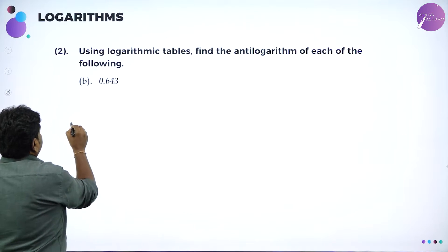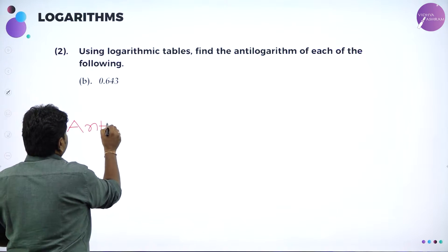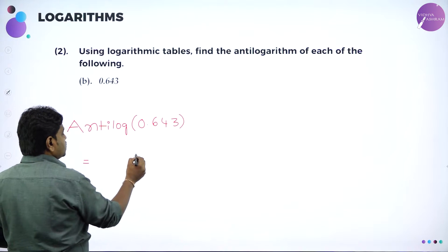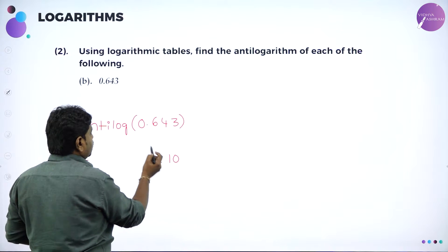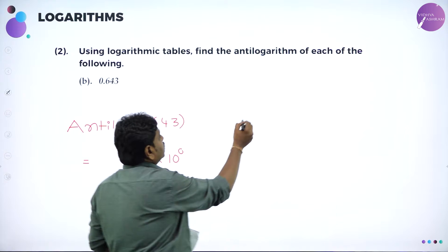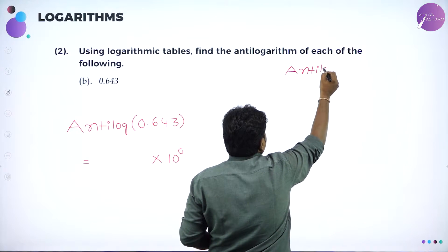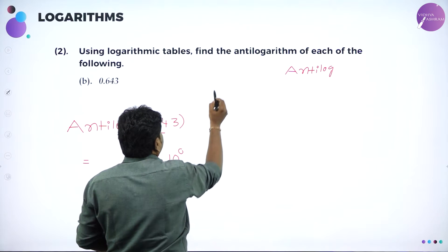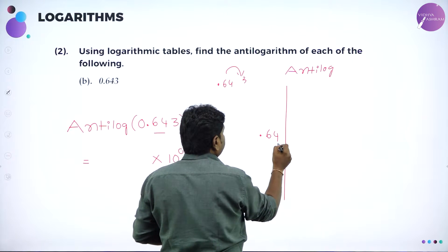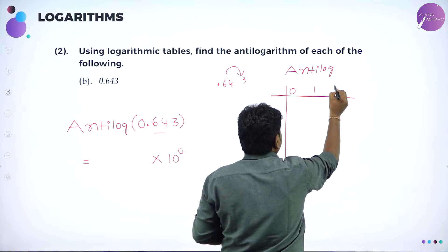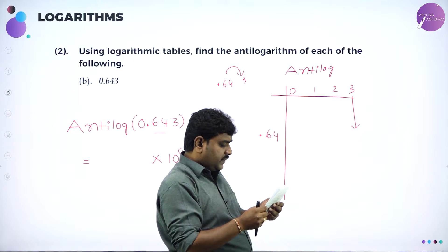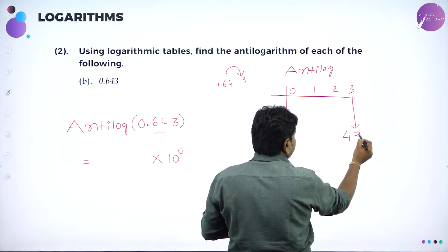Next: find anti-log of 0.643. Before the decimal we have 0, so write 10 power 0. In the anti-log table, look up 0.64 under column 3. Find 0.64 in the first column, then go to column 3. Reading 0.64 under 3 gives 4395.